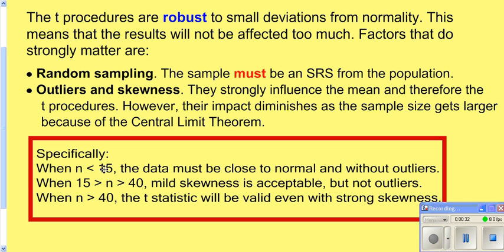If you have a small sample, less than 15, your data needs to be really pretty close to normal with no outliers. If it's larger than 40, then your T is acceptable, even if you have strong skewness.